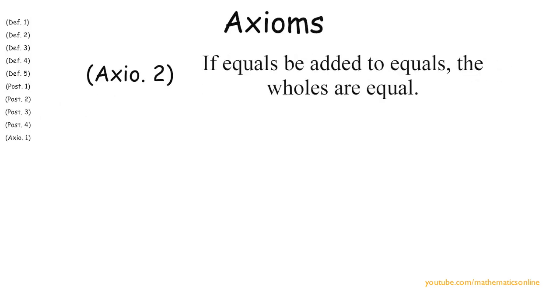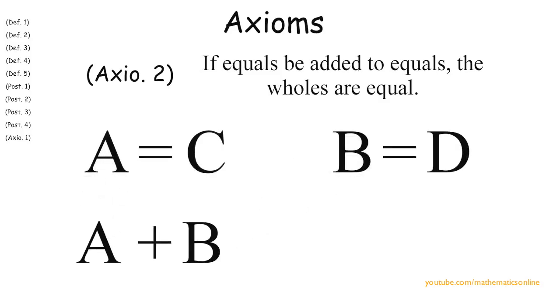Our second axiom says, if equals be added to equals, the wholes are equal. So this means if A is equal to C, and B is equal to D, then A plus B must equal C plus D.